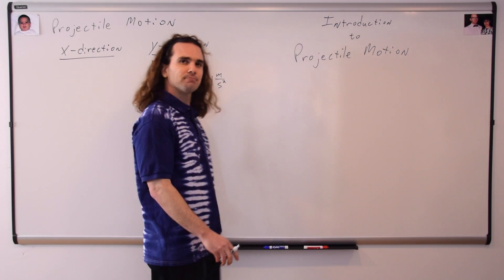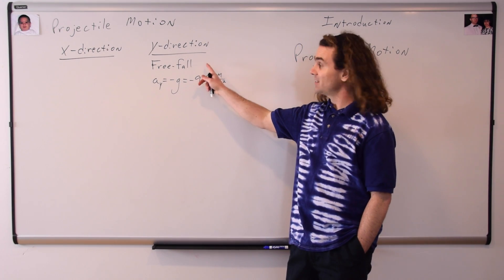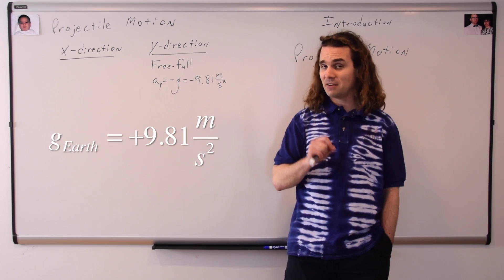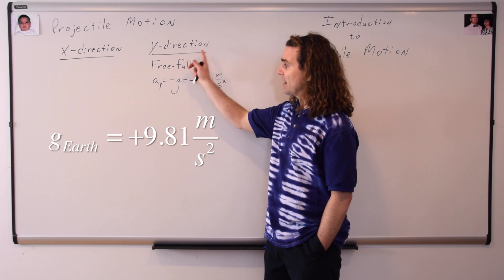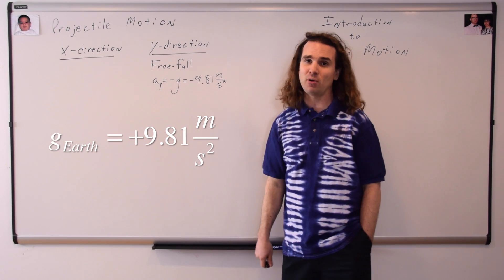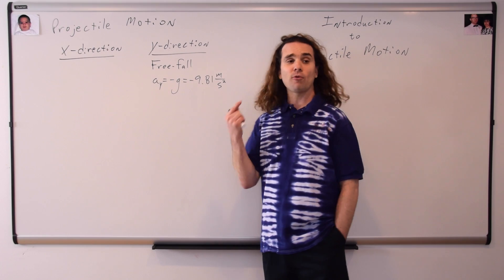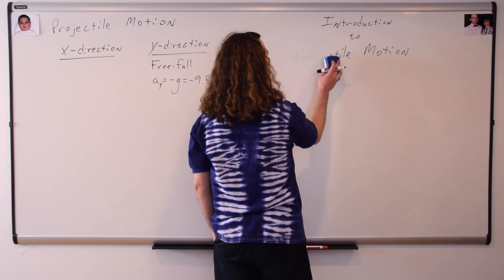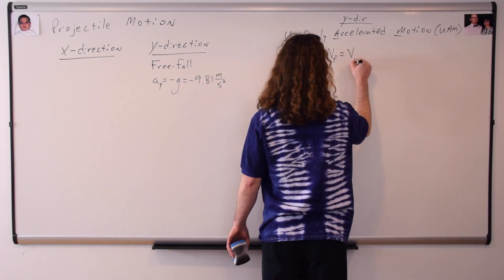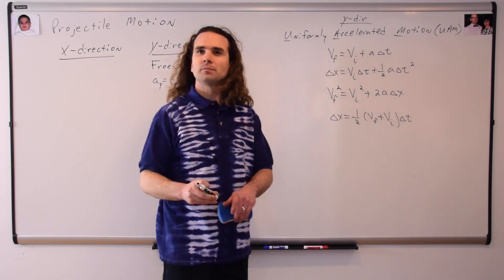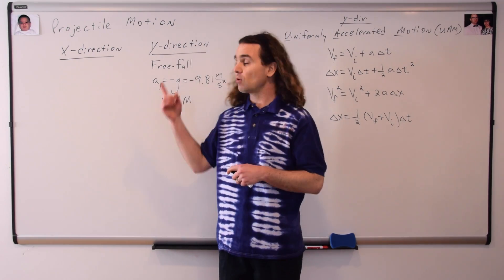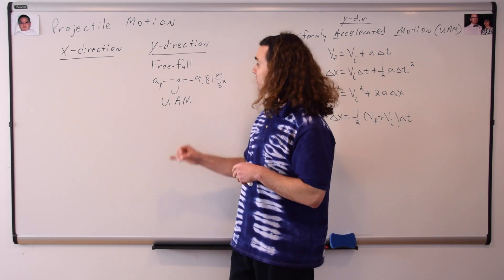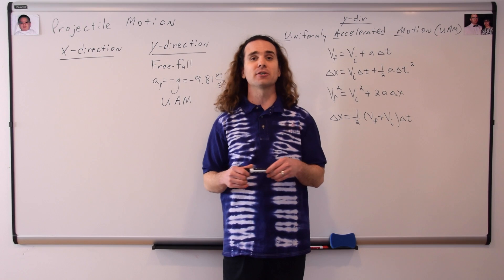So an object in projectile motion in the y direction is in free fall, and we know the acceleration in the y direction is going to be equal to negative g — where on Earth, g is a positive 9.81 meters per second squared. In other words, in the y direction, the acceleration equals negative 9.81 meters per second squared. Therefore, because the acceleration is a constant number, we can use the UAM, or Uniformly Accelerated Motion, equations in the y direction. And we already know the acceleration: it's negative 9.81 meters per second squared.